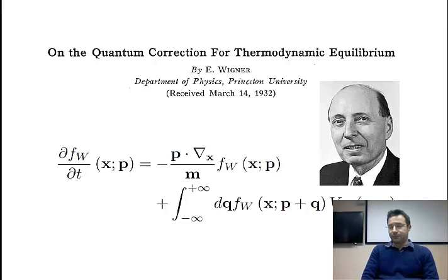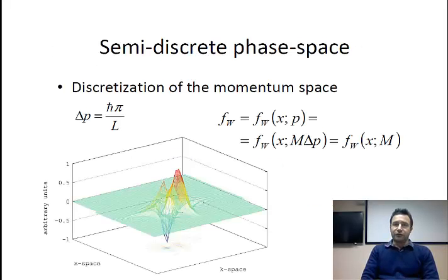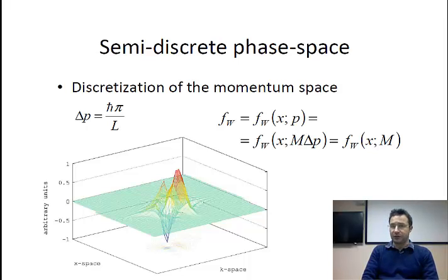One of the advantages is parallelization — you can obtain a very high, very deep level of parallelization, which is hardly conceivable with other methods. What we will try to solve by this Monte Carlo method is the Wigner equation, where the unknown is the Wigner function, which is a quasi-distribution function. The first step to introduce this Monte Carlo method is to define a semi-discrete phase space. We don't discretize the whole phase space — this is why we call it semi-discrete — the only discretization we introduce is in the momentum space.